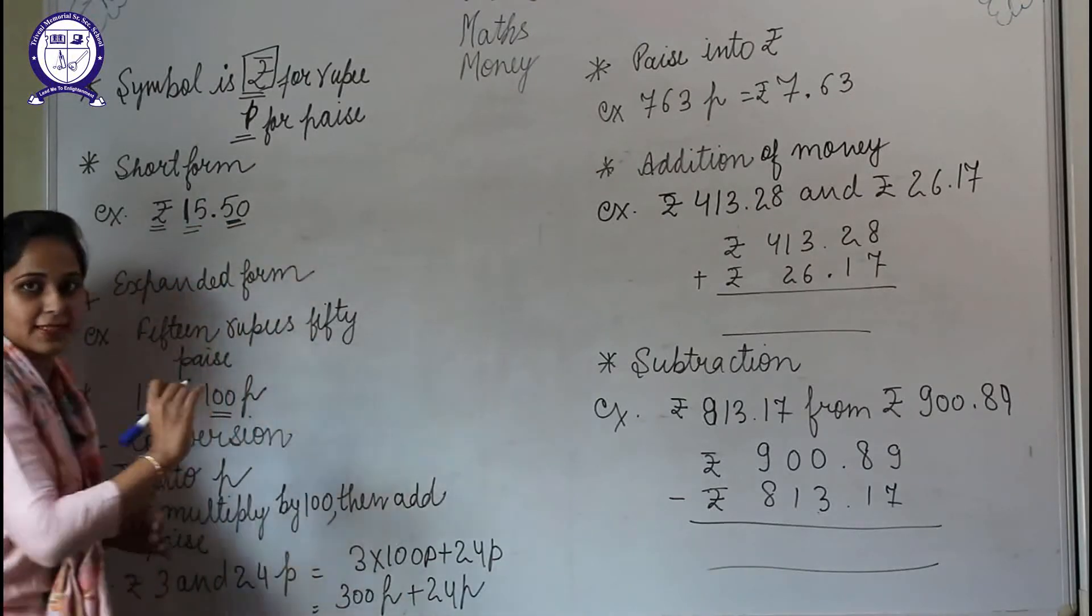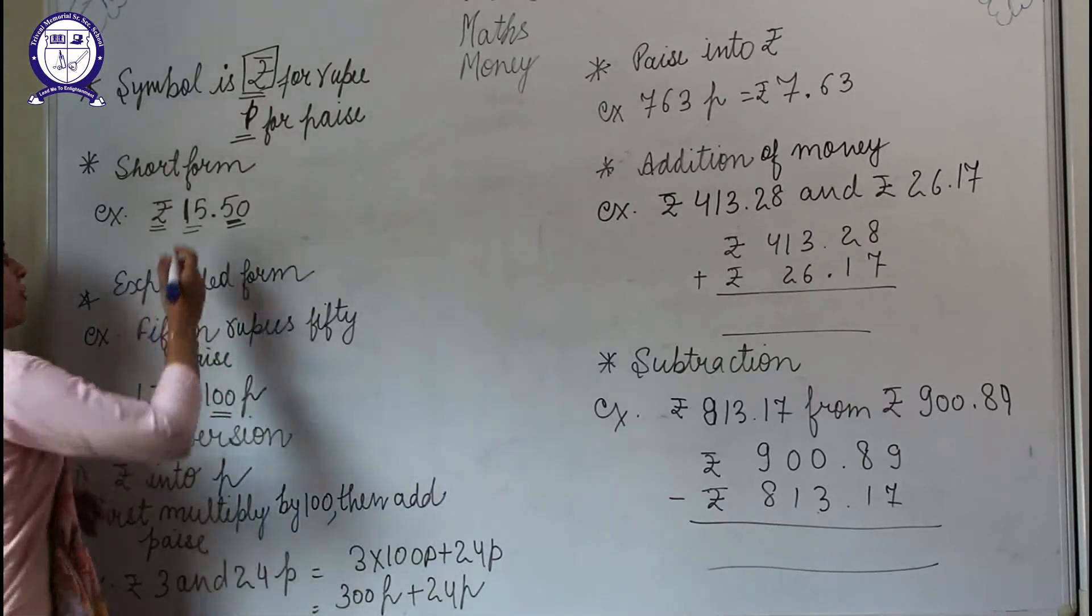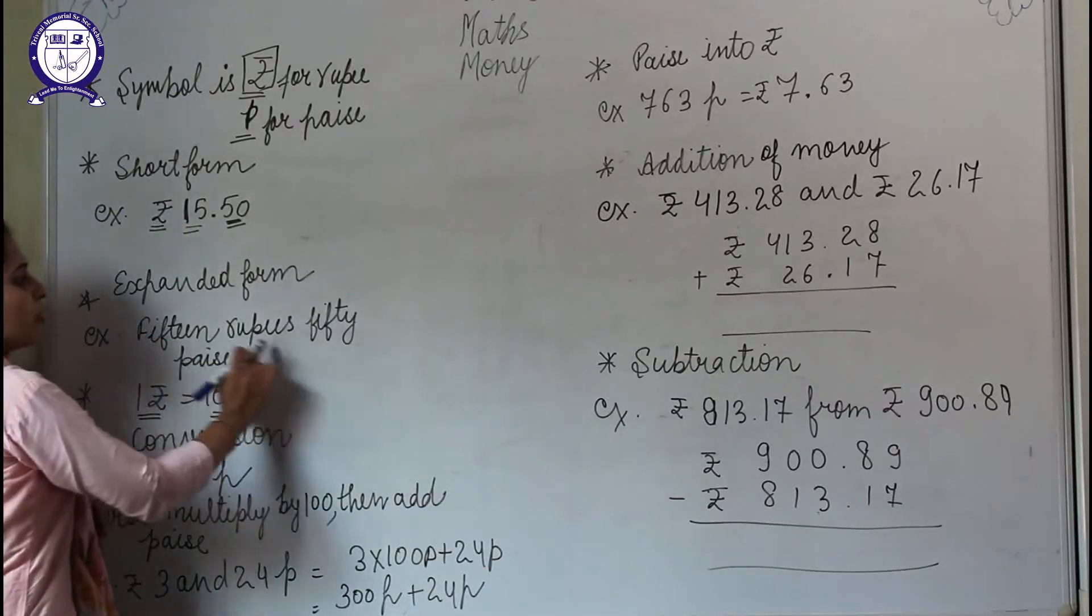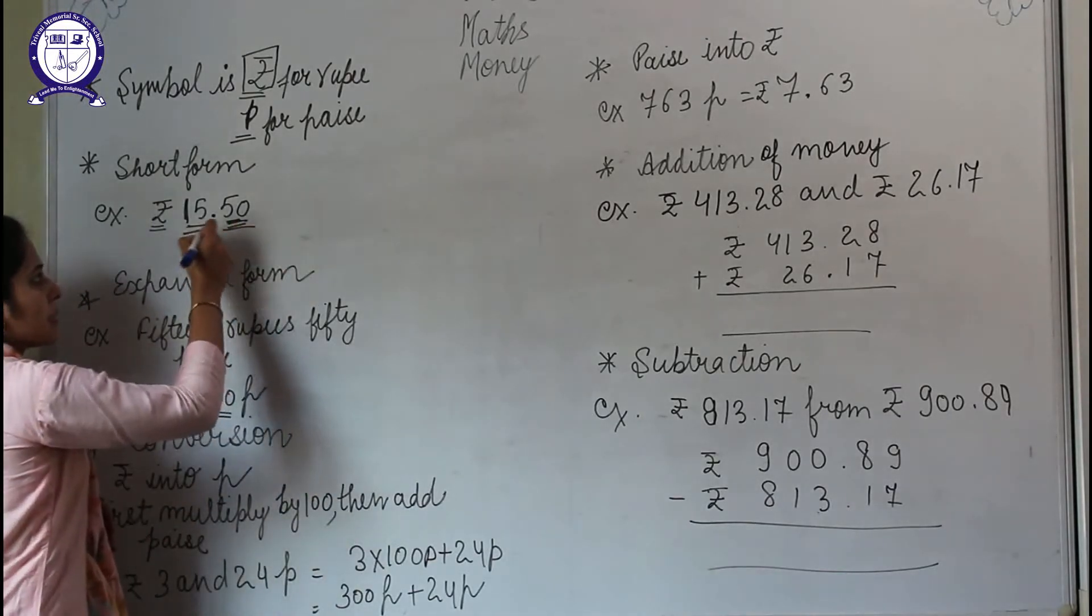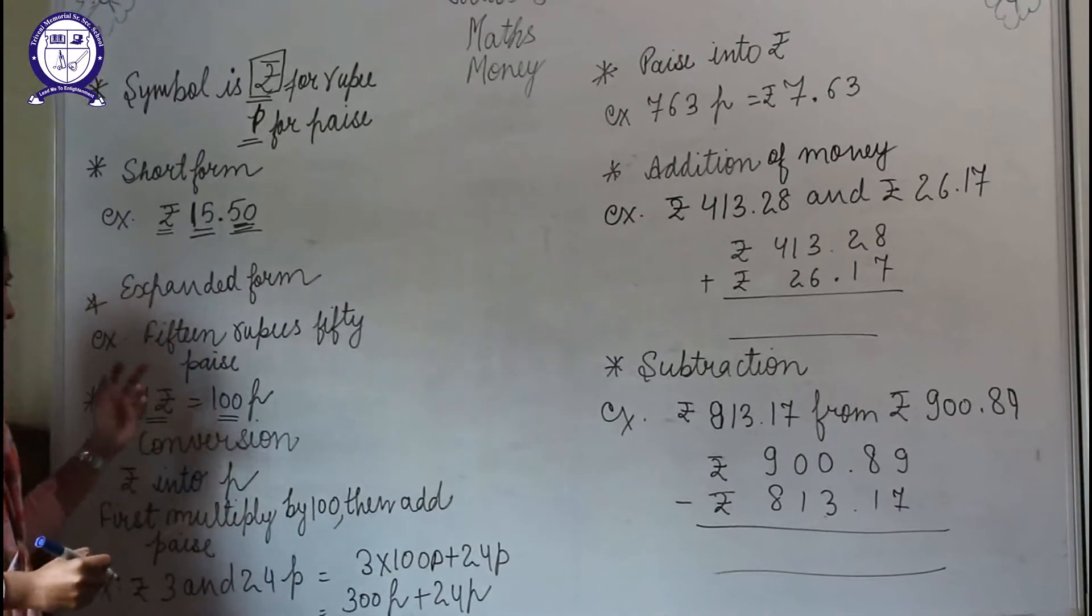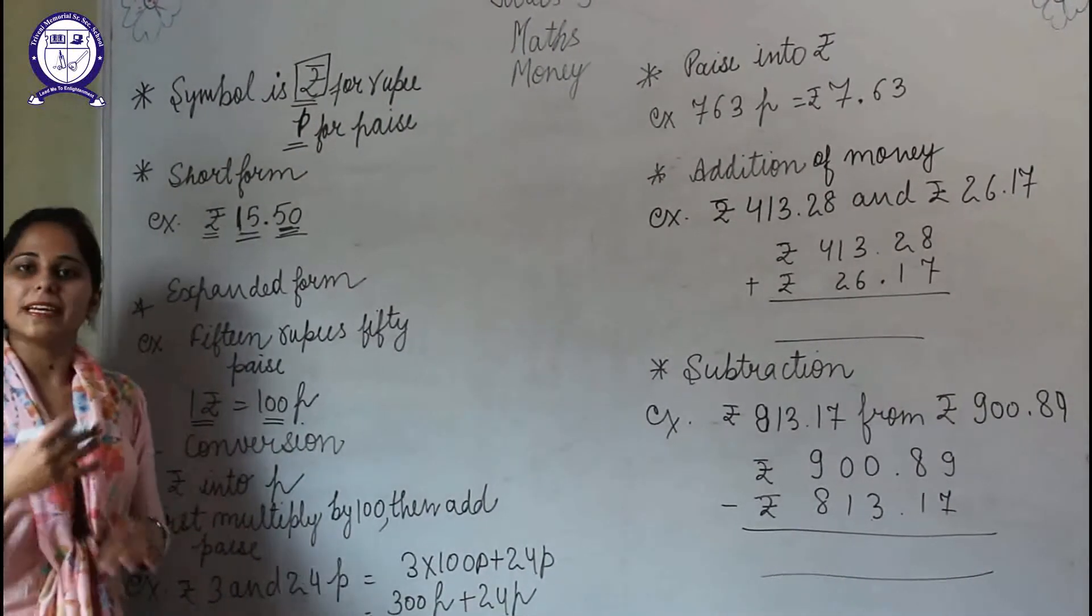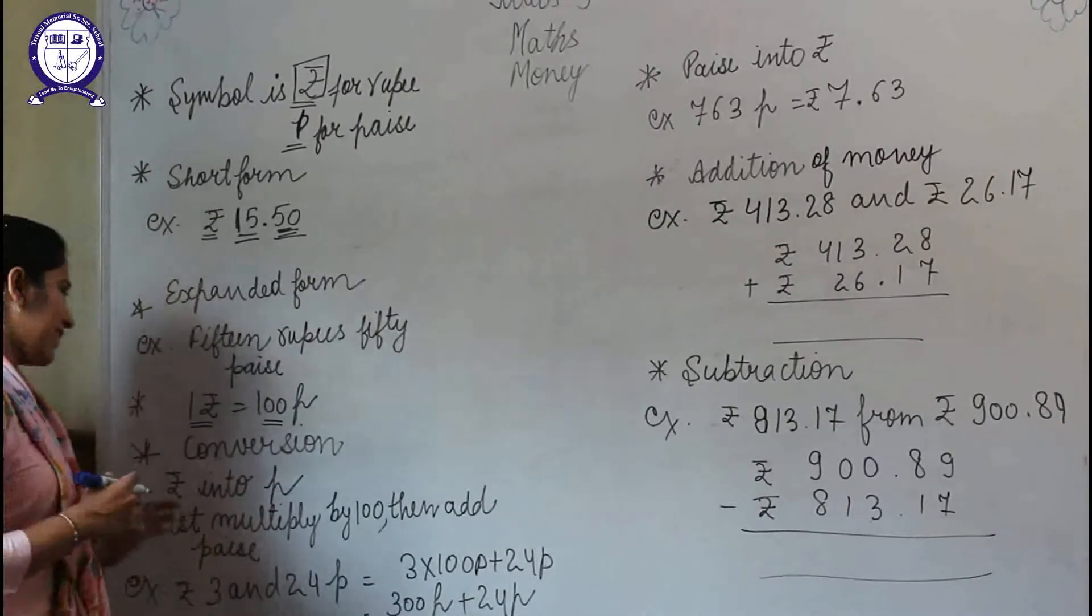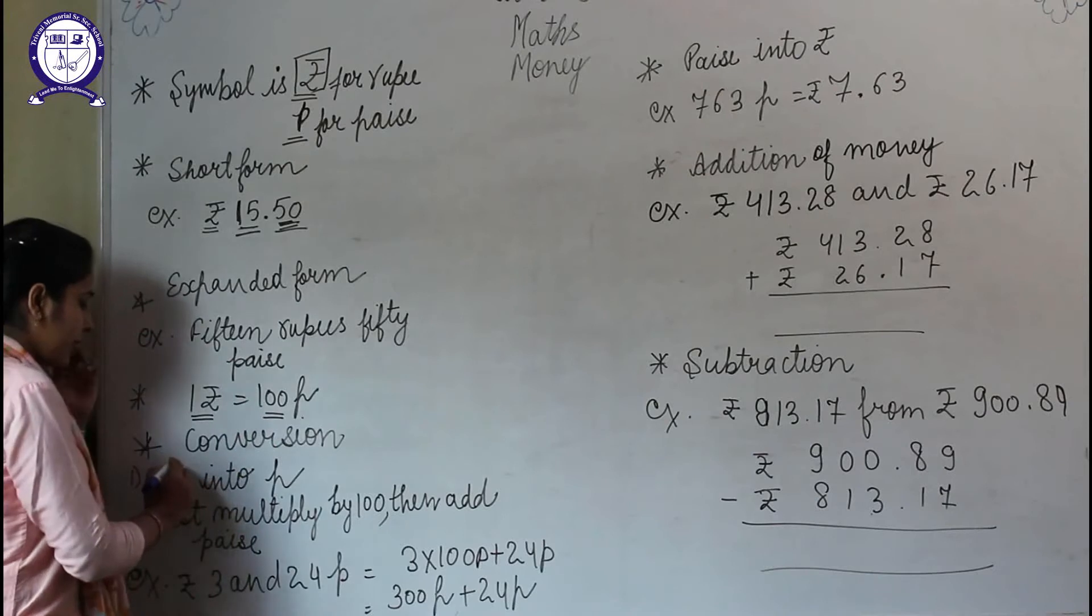well as 50 paise. How to write the expanded form or word form of this money? For this example, we will write 15 rupees 50 paise, because this is representing paise and this is representing rupees. We have discussed that 1 rupee equals 100 paise. How to convert rupee into paise and paise into rupee? We all know that 1 rupee equals 100 paise, so when we need